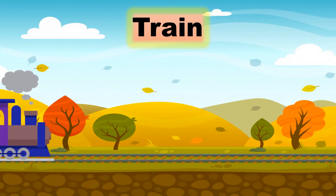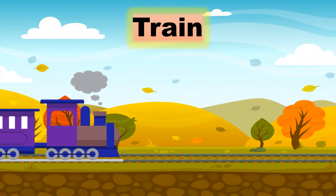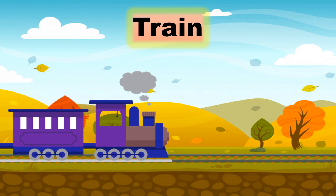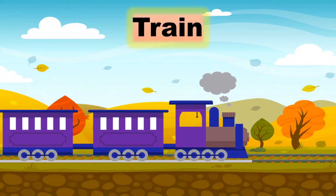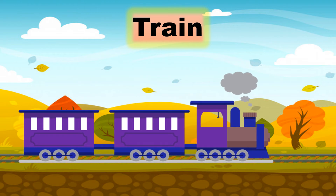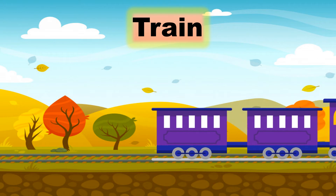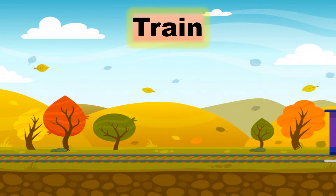Train. It runs on a railway track. Train can carry loads and people from one place to another place for long distances. It is a cheap mode of transport and a lot of people can travel together in a train.